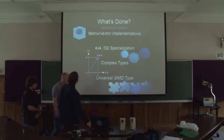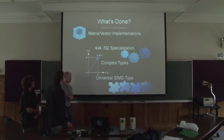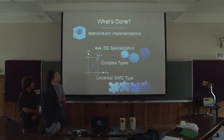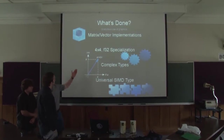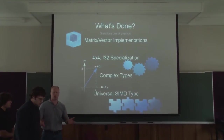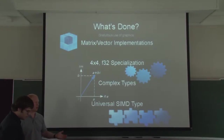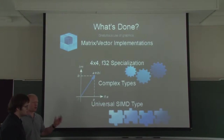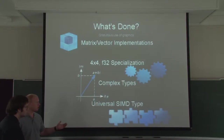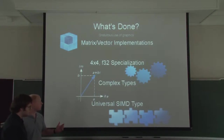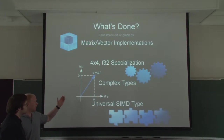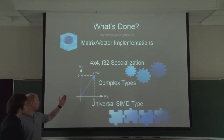Since the last time we presented, there's been some new functionality developed. The matrix and vector implementations — if anyone is familiar with the industry standard BLAS for linear algebra — BLAS1, which is vector-vector operations; BLAS2, which is vector-matrix operations; and BLAS3, which are matrix-matrix operations, are completely done. Most game math is done with 4x4 matrices of 32-bit single-precision floating point, because that's what the GPU expects. We have a template specialization of that, so it's very efficient.